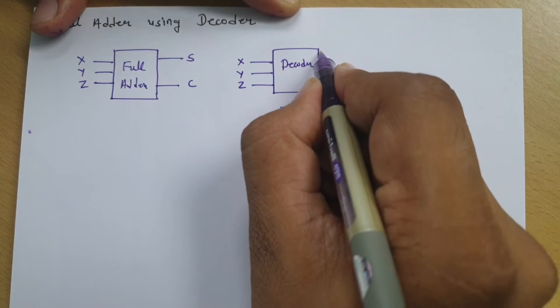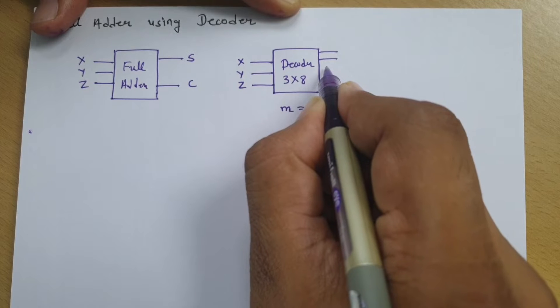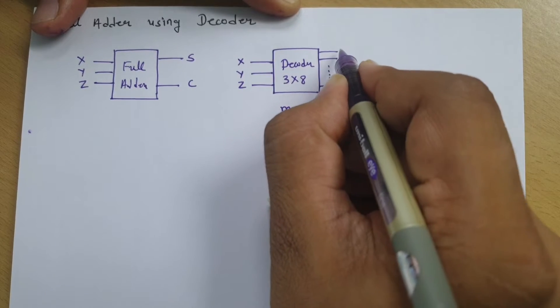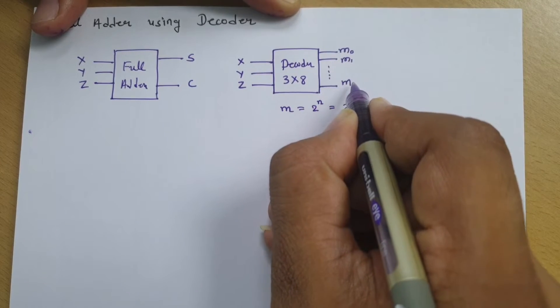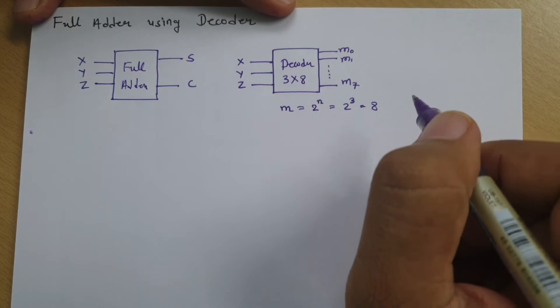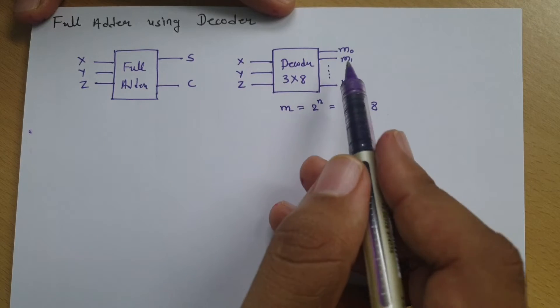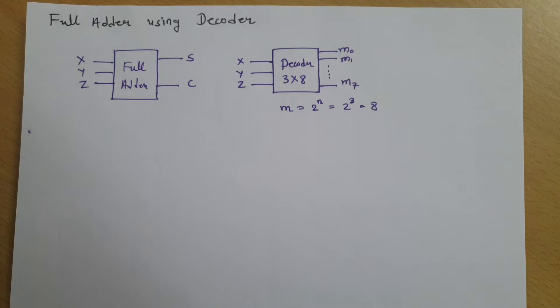So here with decoder, we have 3 by 8 decoder. Total 8 outputs will be there. It starts from m0, m1, and goes up to m7. We will try to implement logic of full adder by using 3 by 8 decoder.